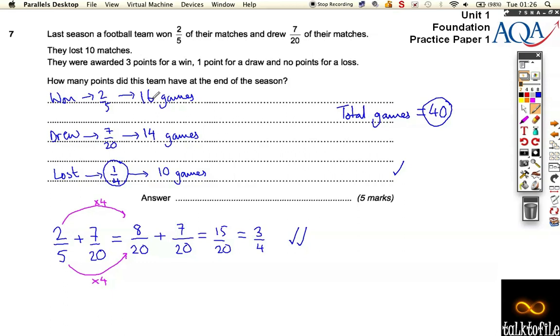So it tells us that actually they had 16, 14, and 10, which is their 40 games, which is what we wanted. That would be another point, that would be another mark.